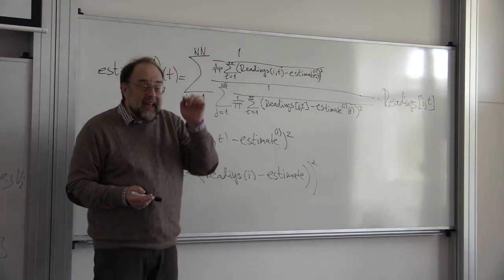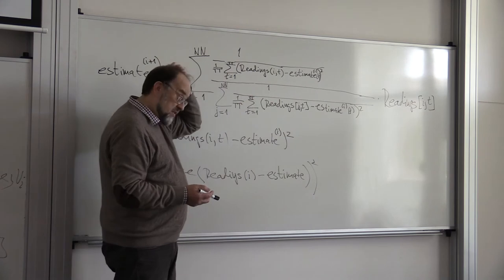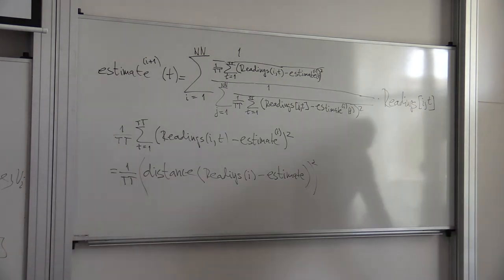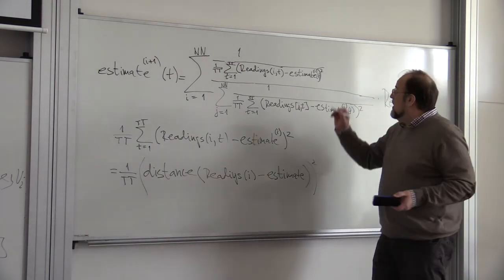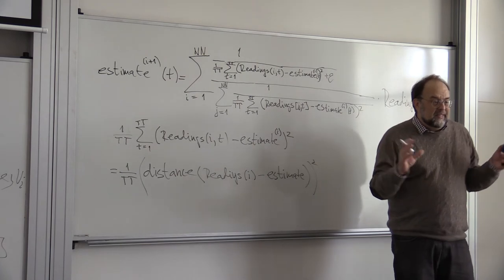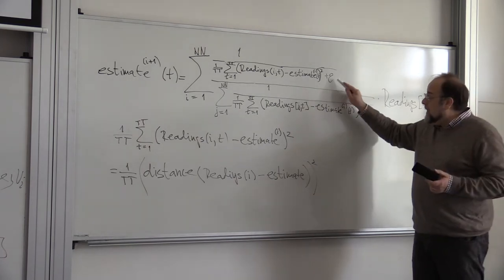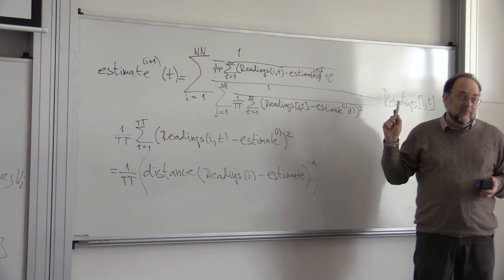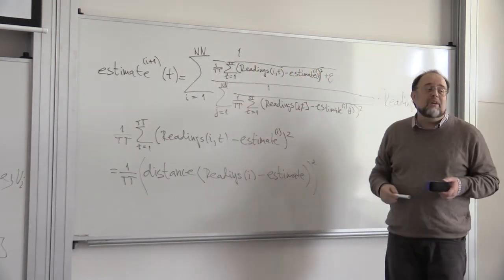And so we simply make the weight inversely proportional to this distance. But we saw that taking reciprocal is bad, because the reciprocal has a pole here. And for some values of the variance, for some data, it can converge to just the value of a single sensor.